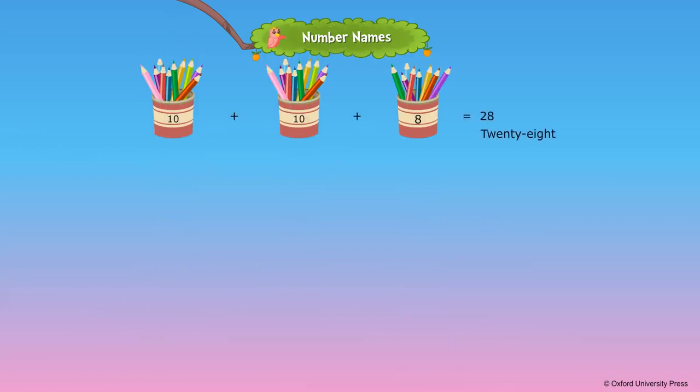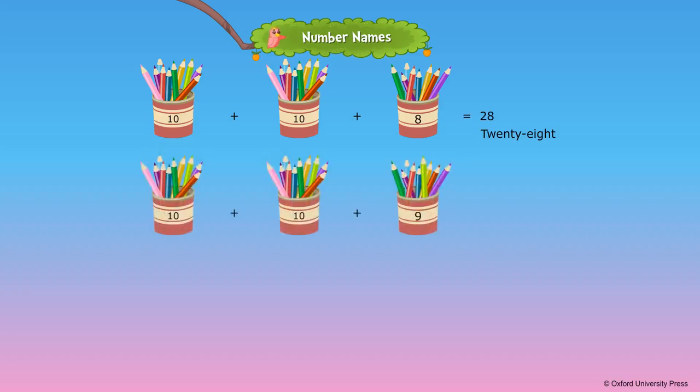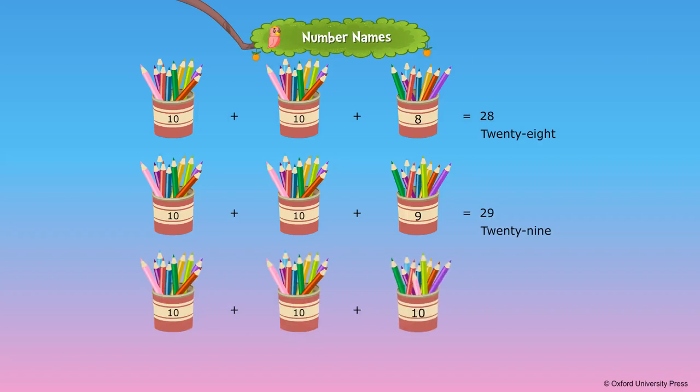20 plus 8 is equal to 28. 20 plus 9 is equal to 29. 20 plus 10 is equal to 30.